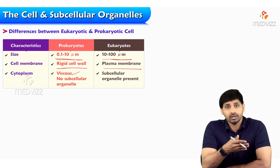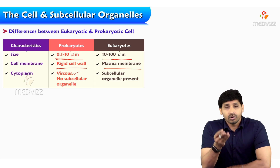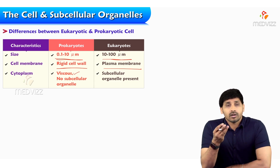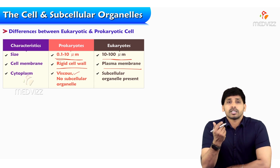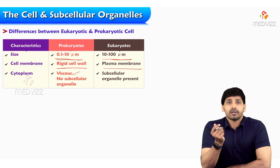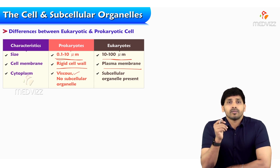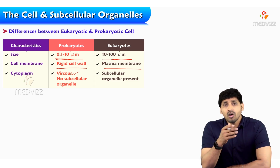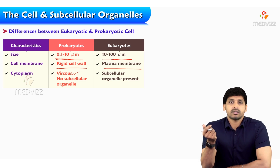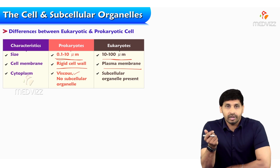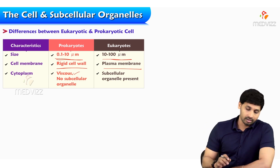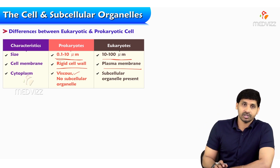As shown in the previous slide, the subcellular organelles in eukaryotes include nucleus, ribosomes, smooth endoplasmic reticulum, rough endoplasmic reticulum, mitochondria, lysosomes, peroxisomes, and centrioles — all these make up the subcellular organelles inside the eukaryotic cell.